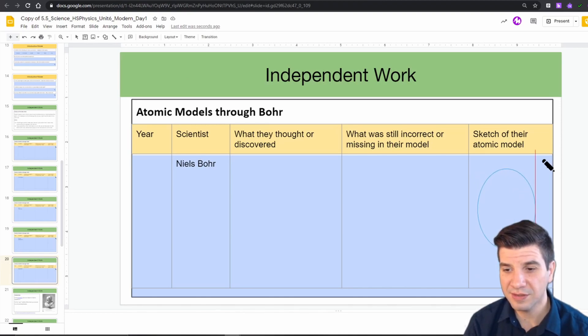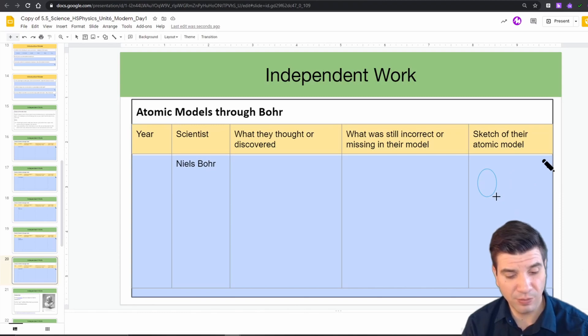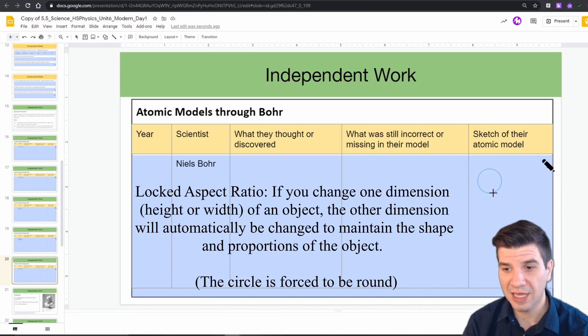One thing you're going to notice is that the aspect ratio is not locked with these. But you could force it to a locked aspect ratio by holding down the shift button. And you'll notice that my circle now snaps to a perfectly round shape. It's no longer an oval. You can let that go.